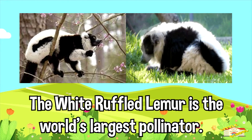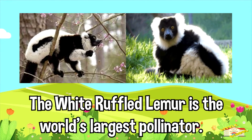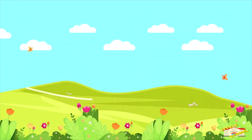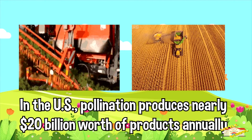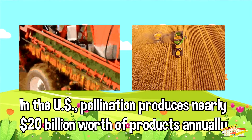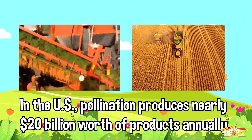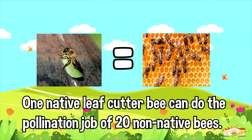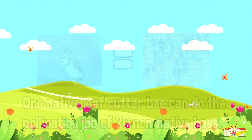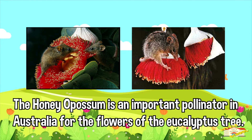In the US, pollination produces nearly 20 billion dollars worth of products annually. One native leafcutter bee can do the pollination job of 20 non-native bees. The honey opossum is an important pollinator in Australia for the flowers of the eucalyptus tree.